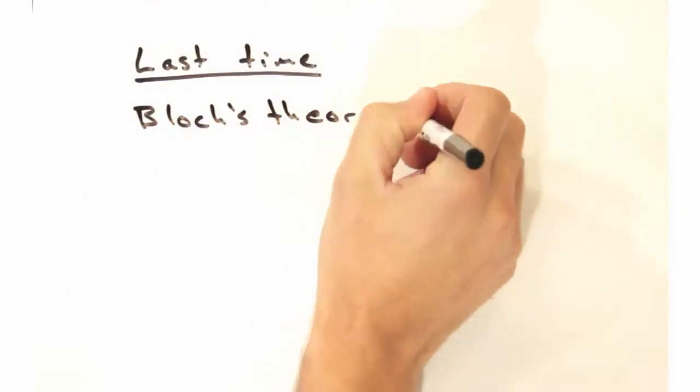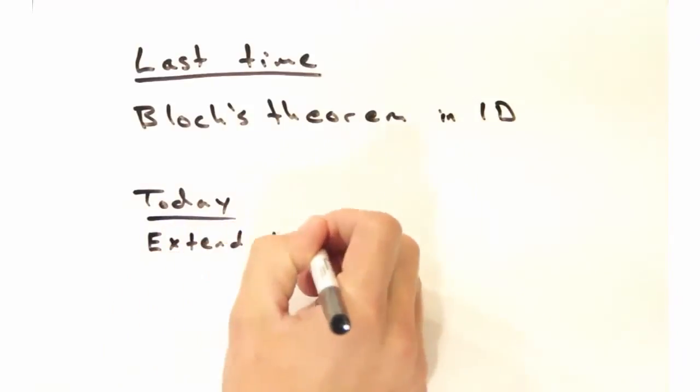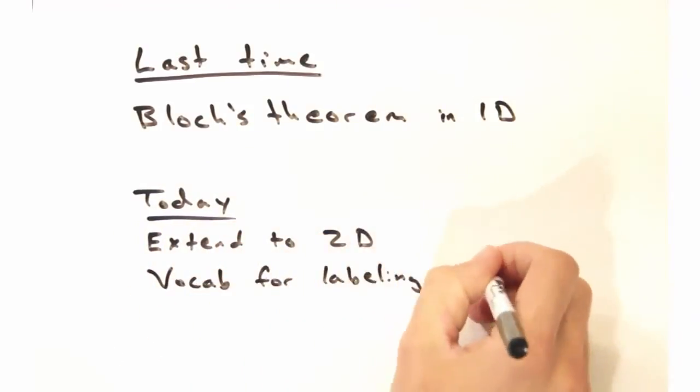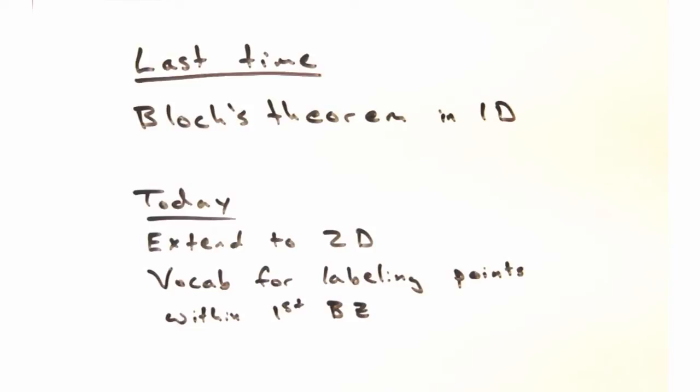Alright, so last time we played with Bloch's theorem in one dimension. Today our goal is to extend this to 2D and give you some basic vocabulary for labeling points within the Brillouin zone.